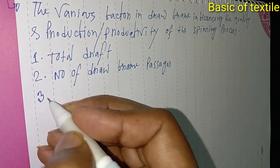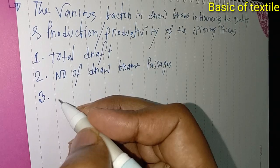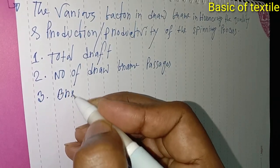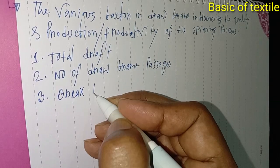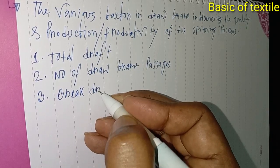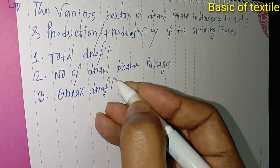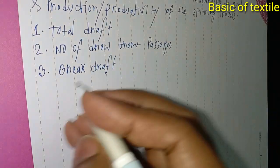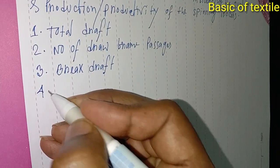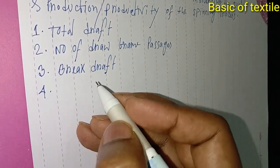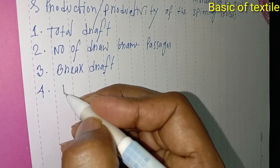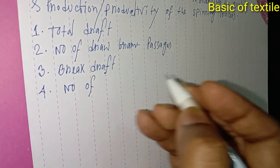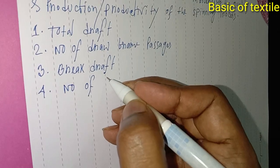Number three: break draft. Number four: number of doubling.